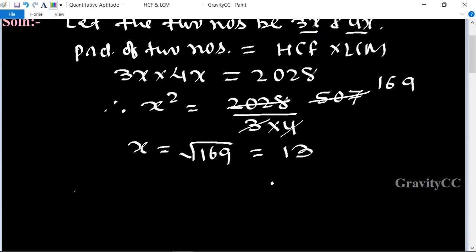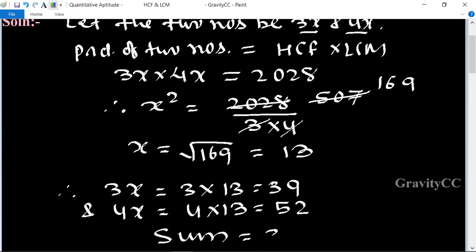So the two numbers are: 3x equals 3 times 13 equals 39, and 4x equals 4 times 13 equals 52. Their sum is equal to 39 plus 52